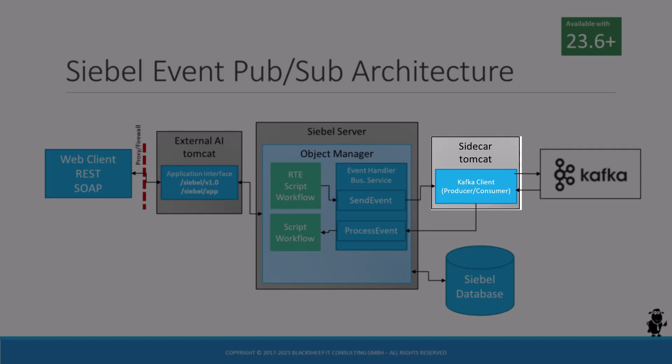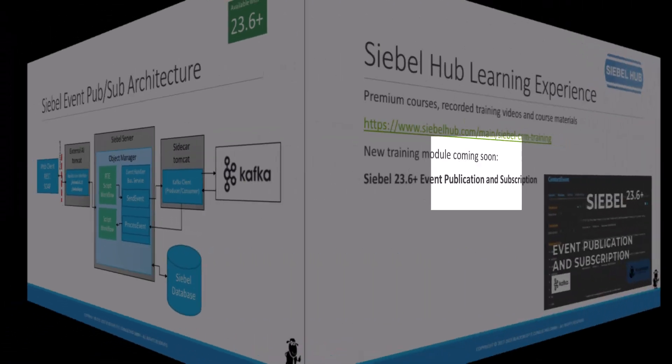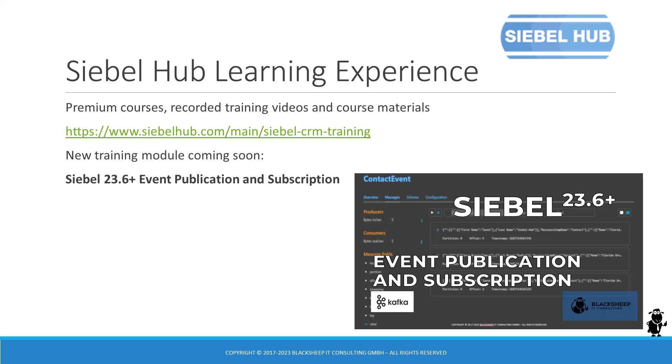Wait — that's a different type of Tomcat server: the sidecar AI. This is the name chosen by Oracle, which can be a bit confusing since this Tomcat does not actually host the application interface AI. It acts as a Tomcat in the middle between the Siebel object manager and Apache Kafka, running the Kafka client producers and consumers. Maybe 'sidecar Tomcat' is a less ambiguous name. If you want to learn more about the new event publication and subscription feature, stay tuned for our new Siebel Hub training course, which is about to be published soon.